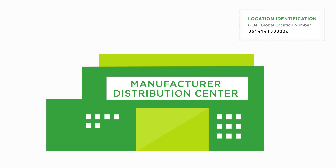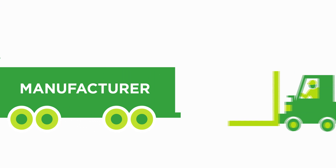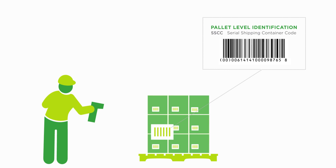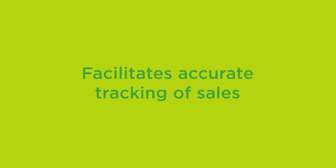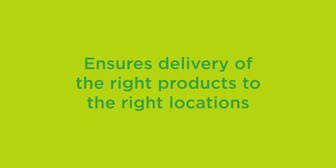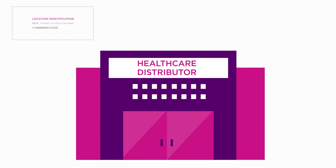At the manufacturer distribution center, which is identified by a GLN, GTINs and SSCCs are used to track shipping units and for receipt verification. This facilitates accurate tracking of sales, ensures delivery of the right products to the right locations, and initiates pedigree.